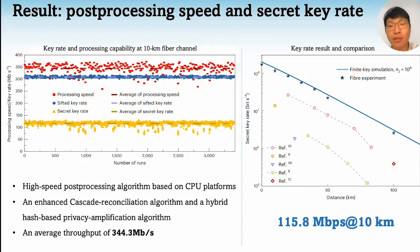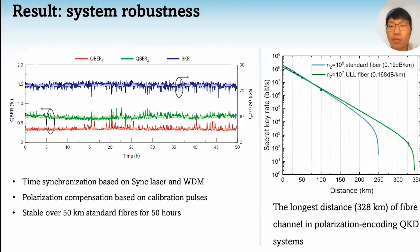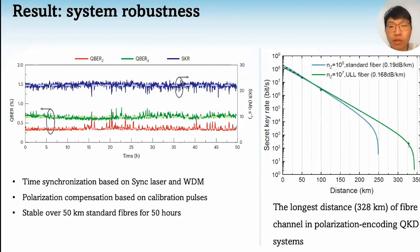Finally, we are able to generate a secret key rate as high as 115 Mbps over a 10-kilometer standard fiber channel. We also applied time synchronization and polarization compensation techniques to compensate for the drift in the fiber and stabilize the whole QKD system. Time synchronization is achieved by a sync laser with a slightly different wavelength, which is frequency-multiplexed with the classical communication channel. The sync laser is then detected by a photodetector on the detector side, and the generated electrical signals are used to compensate for the time drift between the transmitter and the receiver.